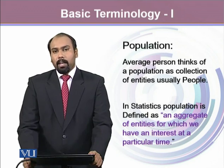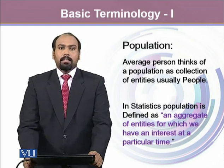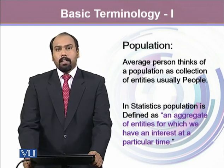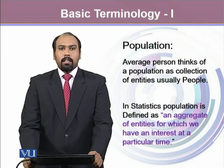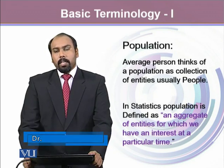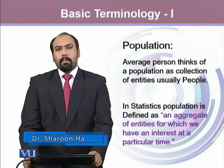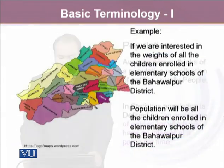The first term is population. The average person thinks of population as human beings. But when we talk about population in statistics, it refers to the totality or aggregate of anything that is of our interest. That may include humans, cells, and even lab equipment can be our population. In statistics, our major focus is on our interest — anything that relates to our study is called part of our population.